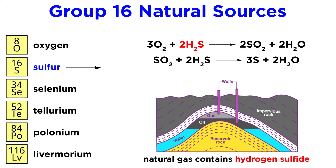More commonly, we can get sulfur from hydrogen sulfide in natural gas. This can be reacted with oxygen to get sulfur dioxide and water, and sulfur dioxide can react further with hydrogen sulfide to produce elemental sulfur and water.